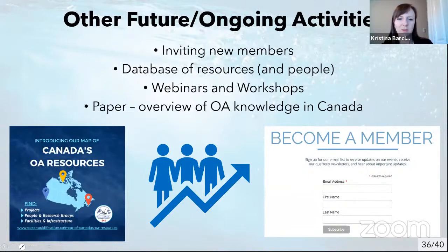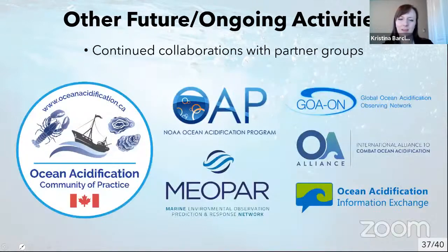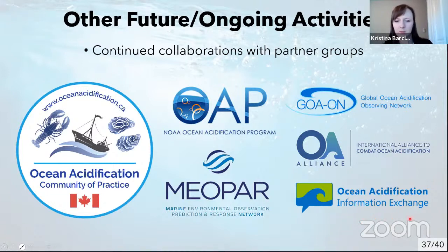Other things we're working on: inviting new people and hoping people can add themselves, a database of resources, papers, projects, and people, upcoming webinars and workshops, and a white paper that's an overview of the state of OA knowledge in Canada — hopefully to be submitted in a few months. We also maintain collaborations with lots of international OA groups, including the OA Information Exchange, GO-ON, and the OA Alliance.